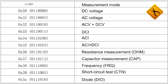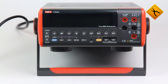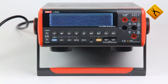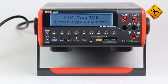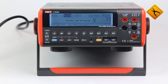A list of commands in hexadecimal system is provided for creating an individual algorithm for device operation. The multimeter is equipped with a large graphic display with a maximum of 200,000 counts.